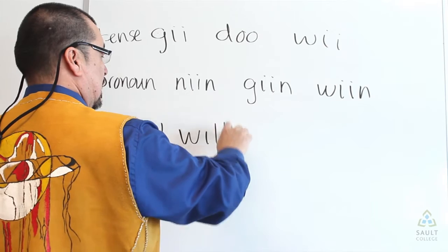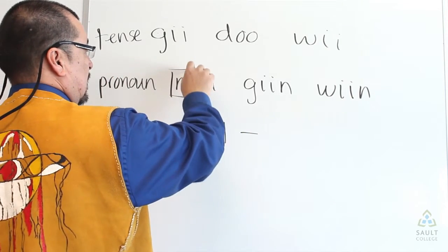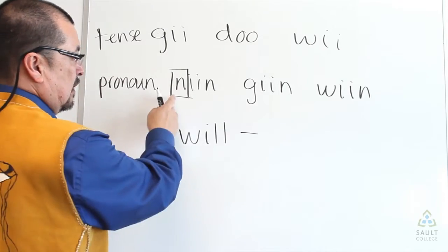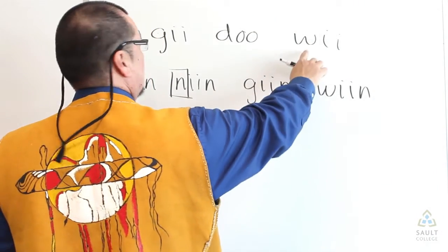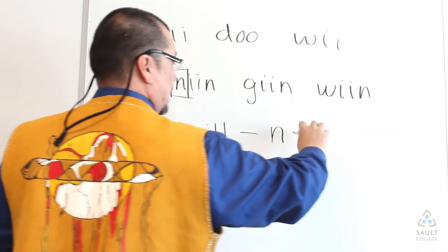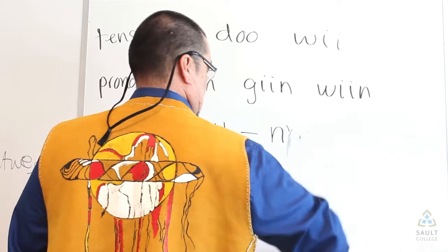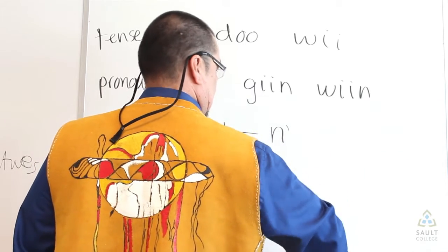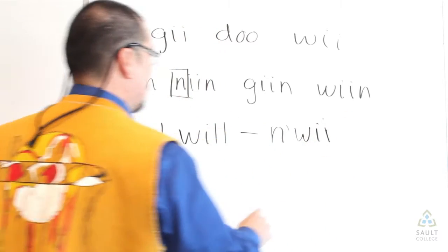I will is, you're going to take the contraction of your personal pronoun, and you're going to combine it with the future tense of will. You're going to say nwi. I will.